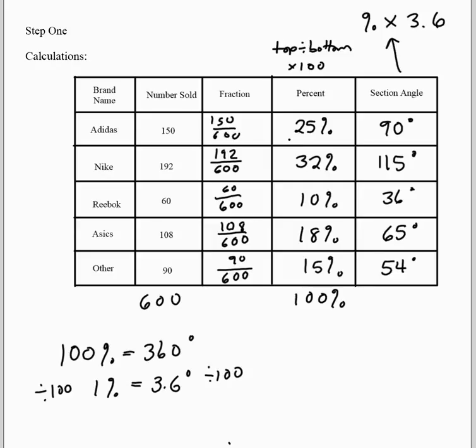Ideally your angles should add up to 360 degrees, but because of rounding you might be slightly lower or higher depending on whether you rounded a couple up or down. Now that we have that information, we can actually make our circle graph.